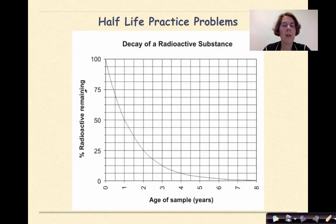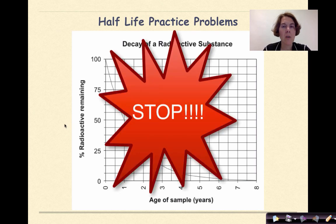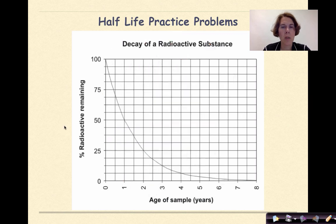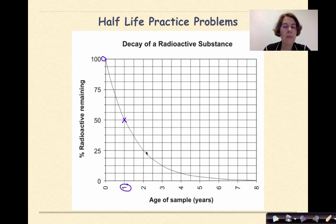Here is another graph showing the decay of a radioactive substance. At time 0, we have 100% of the particles being radioactive. To figure out the half-life, we take 100 and divide it in half to 50, then go across to see where it intersects the line — that's 1 year. We check by going from 50 to 25, which intersects the line at 2 years, and from 25 to 12.5, which intersects at 3 years. The half-life of this sample is 1 year.